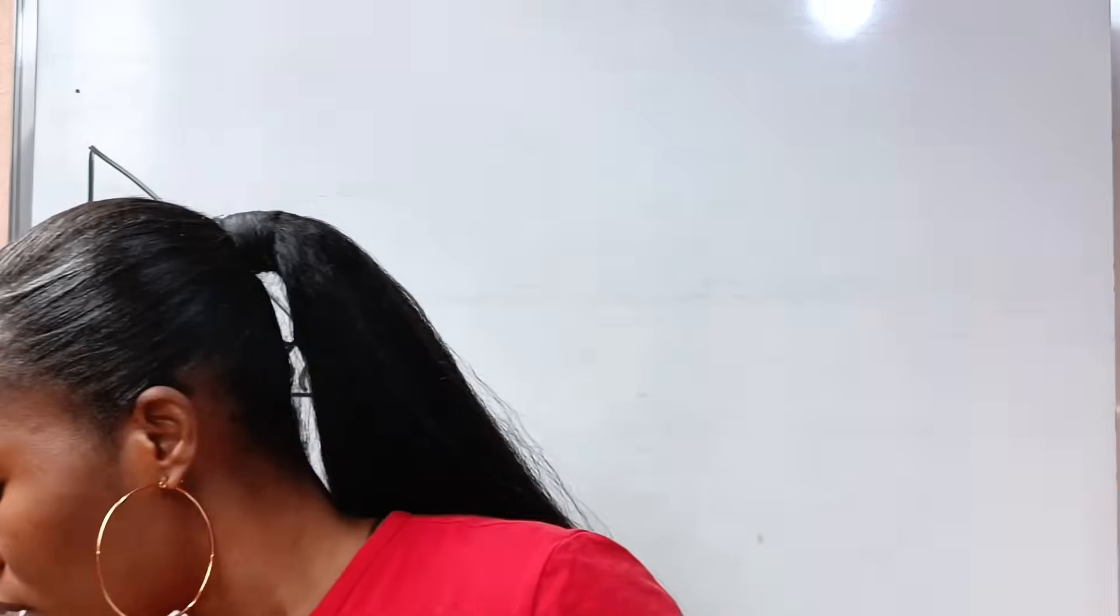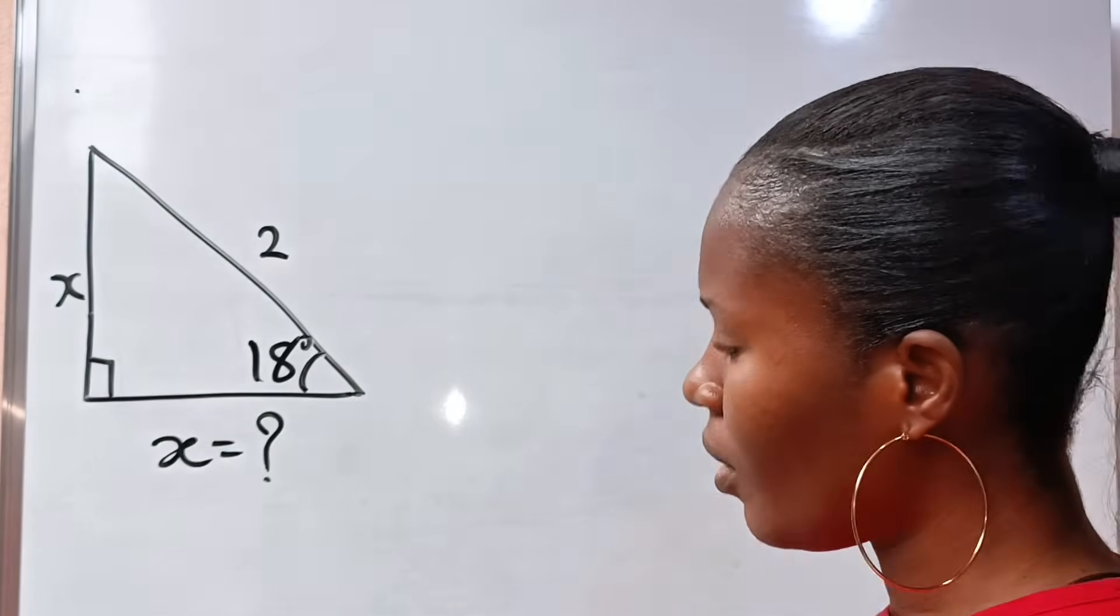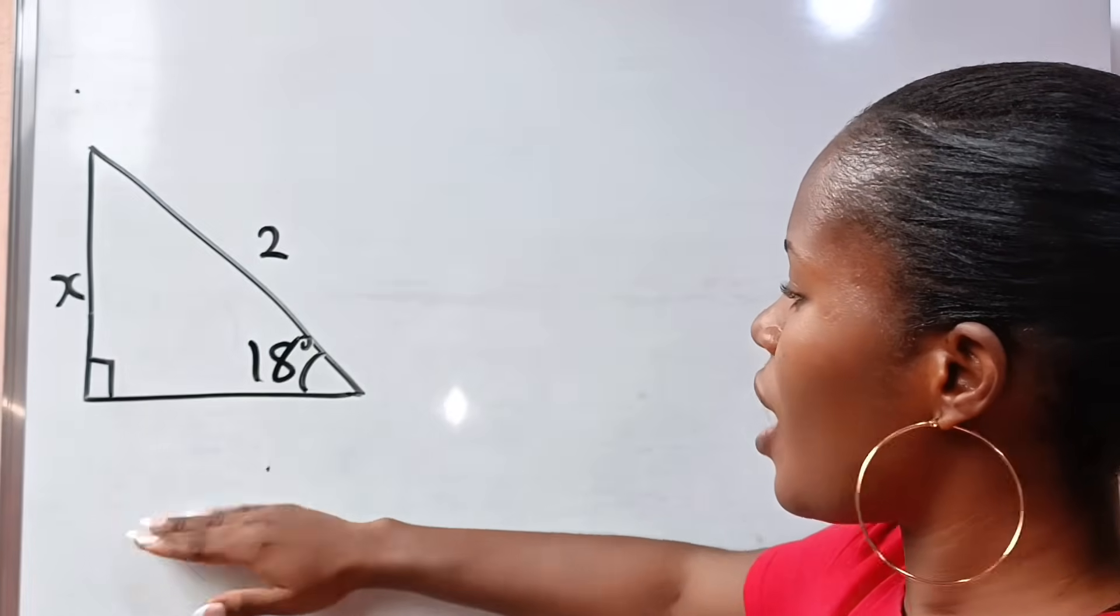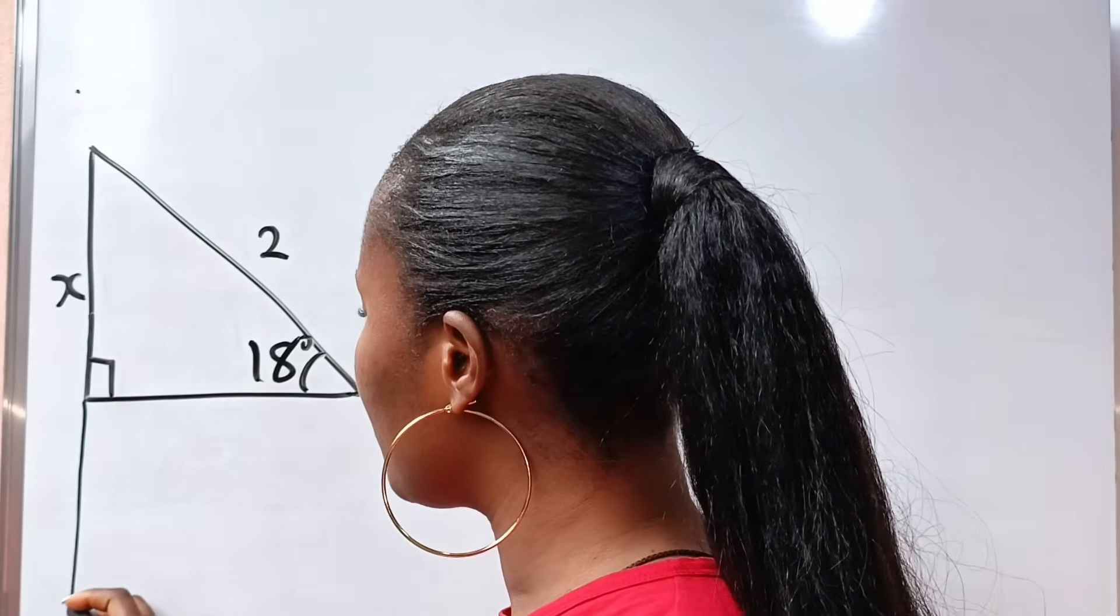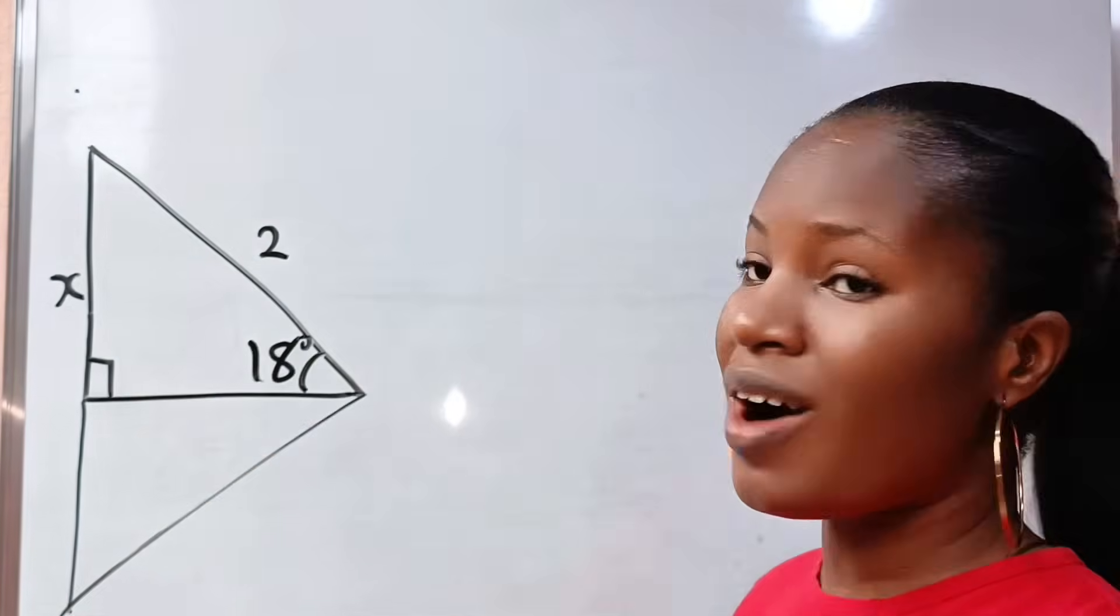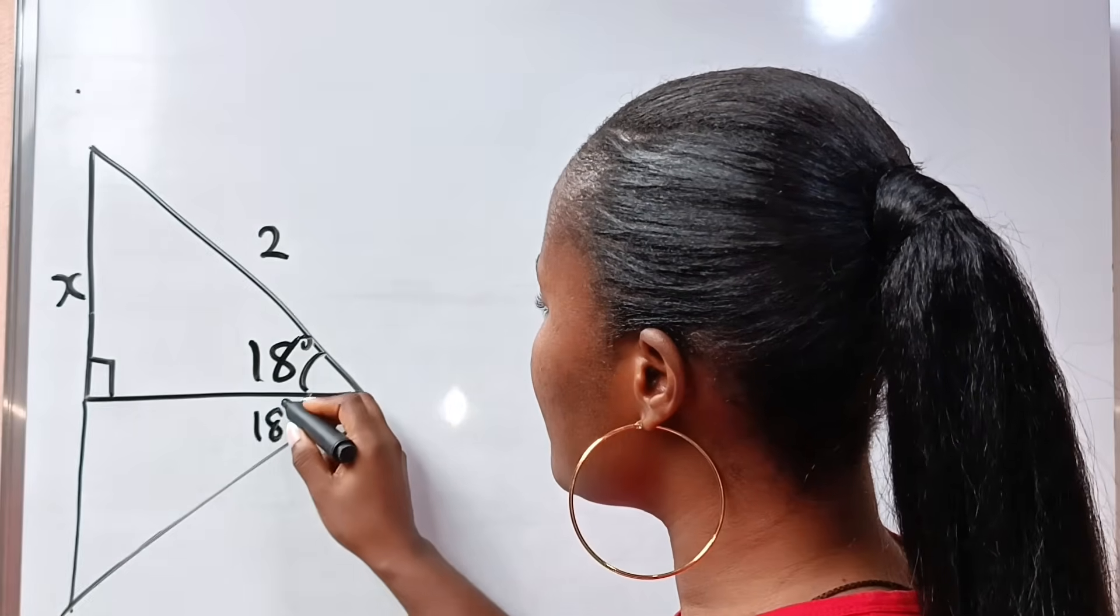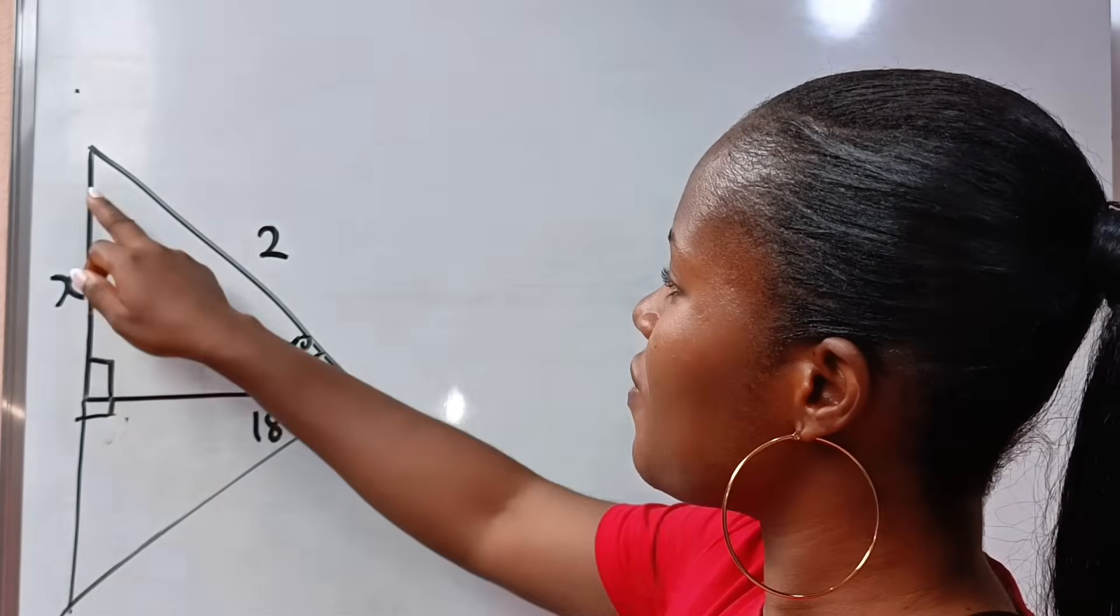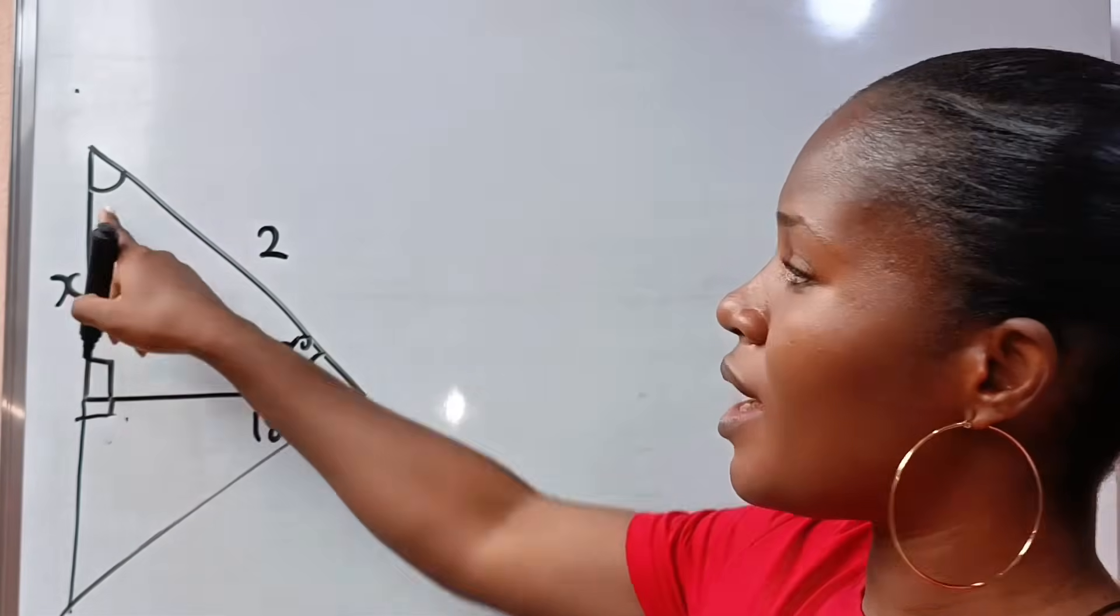So where do we go from here? What we'll do is this. Let us duplicate this triangle. Let's draw another congruent triangle. This is not drawn to scale. We are assuming that this triangle and this triangle are congruent. And if they are, that means this place is 18 degrees as well, and this place is 90 degrees as well. Now let us first find this particular angle here. To get that is very easy.